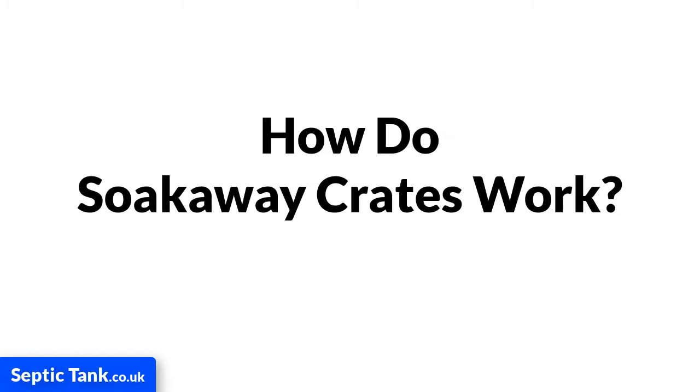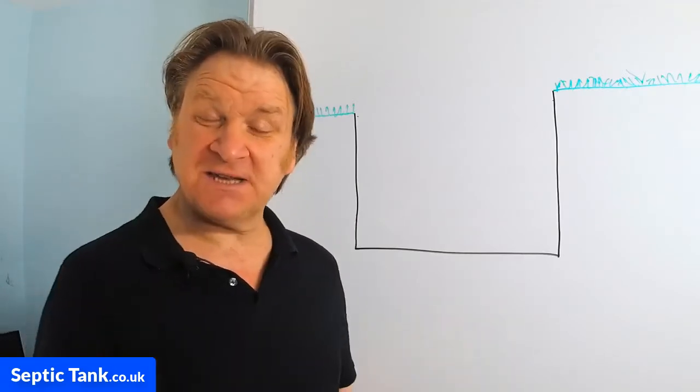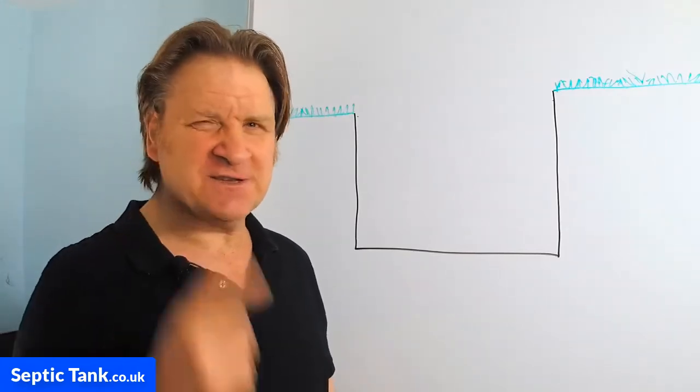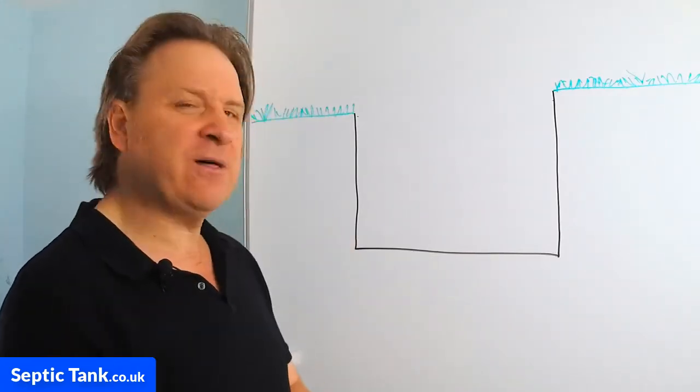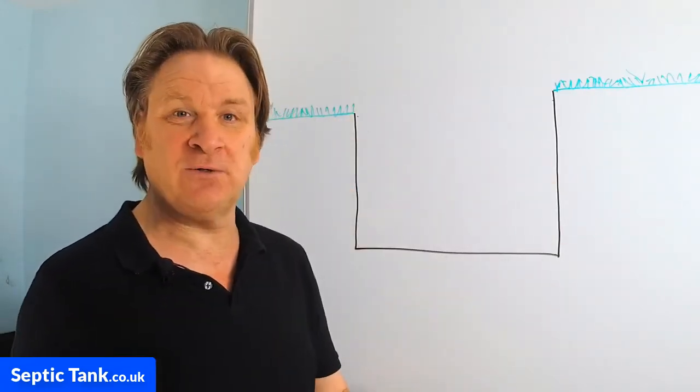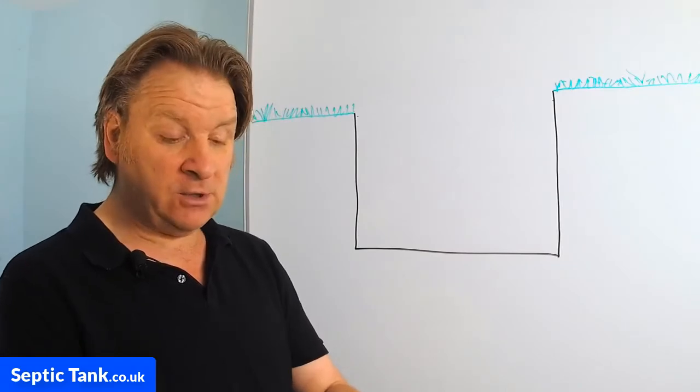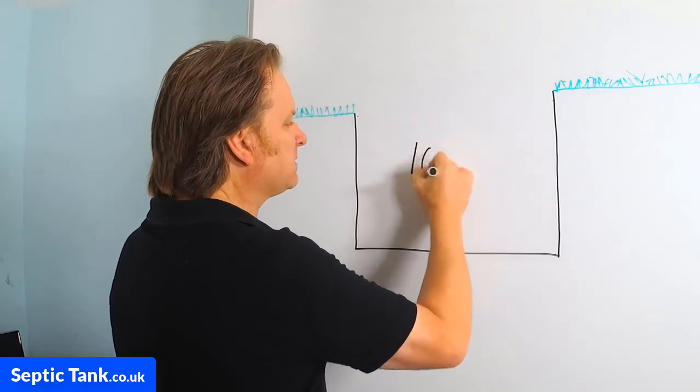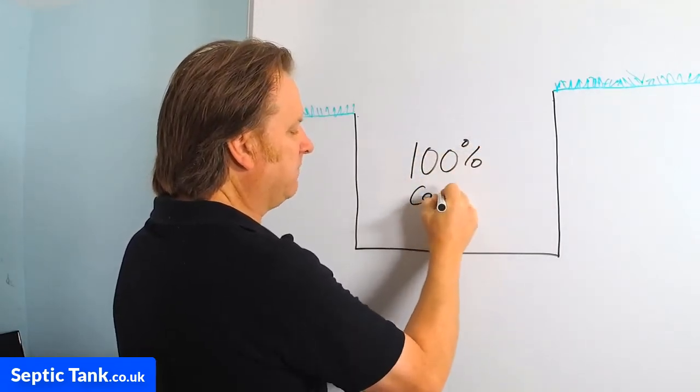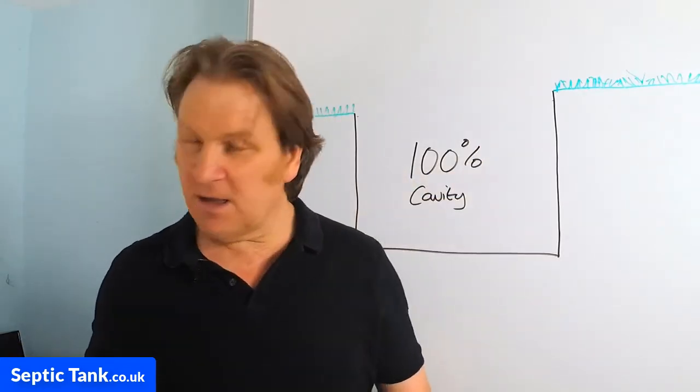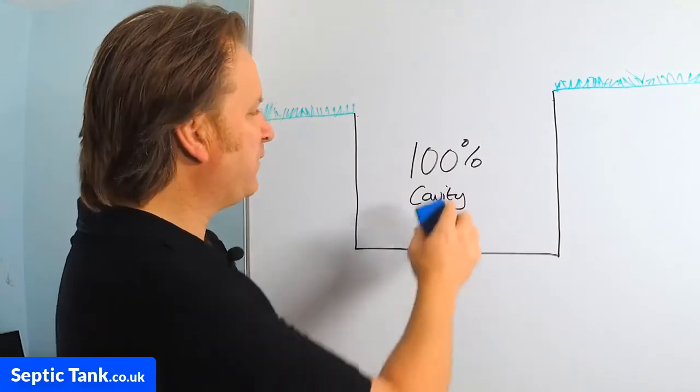So, how do septic tank soakaway crates work? Well, they're a very clever invention invented by some very clever scientists. Let me show you how they work, and then you'll see what I mean. So, imagine you've just dug a hole. It doesn't matter the size of the hole. It could be big, could be medium, could be small. But the point is, when you've dug your hole, you've got a hundred percent cavity or space that you've just dug out. That's the whole reason you've dug a hole, because you want to make a pit for yourself.